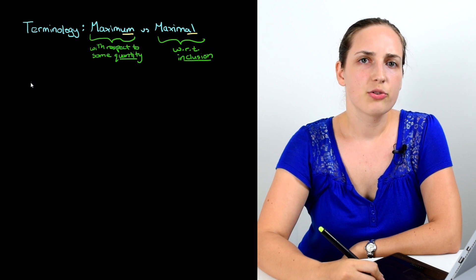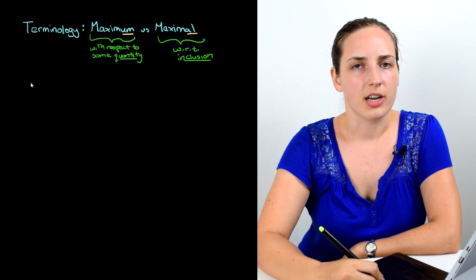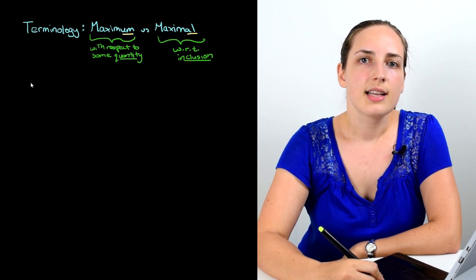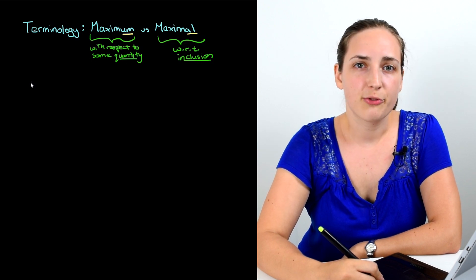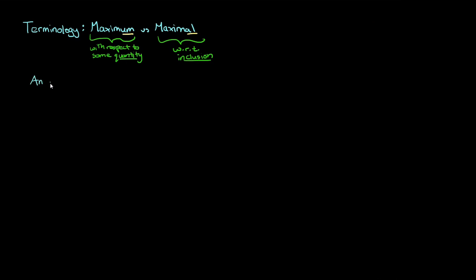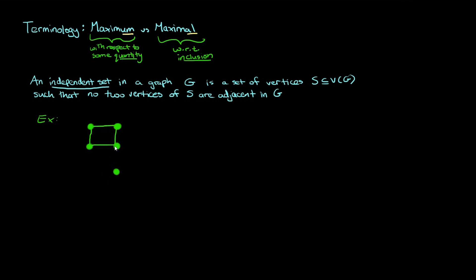Alright, so to give a practical demonstration of the difference between these two words, let's use an example. We're going to talk about independent sets, so let's first define those. An independent set in a graph G is a set of vertices S, a subset of the vertex set, such that no two vertices of S are adjacent in the graph. Let's take a look at a quick example. Here I'll draw five vertices and adjoin them like this with these five edges.